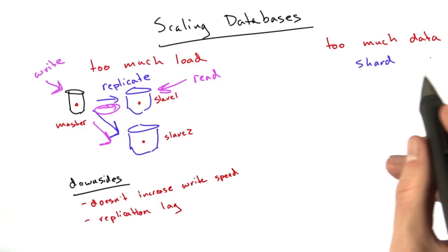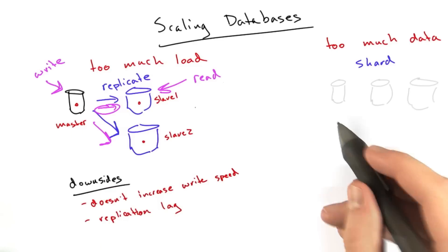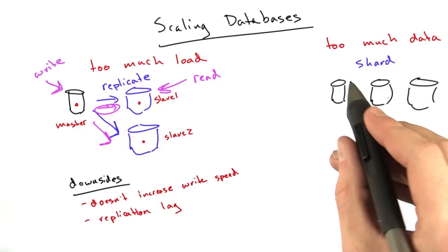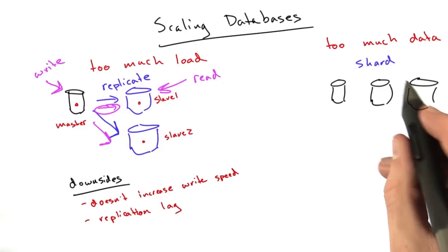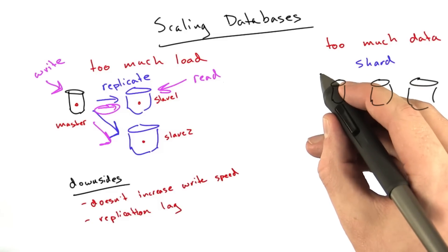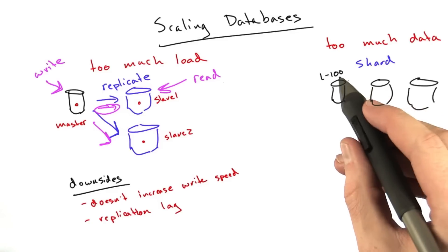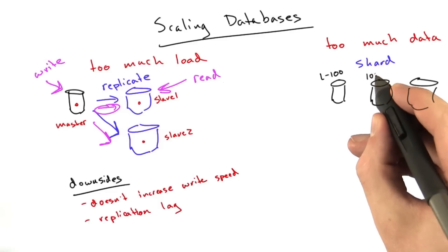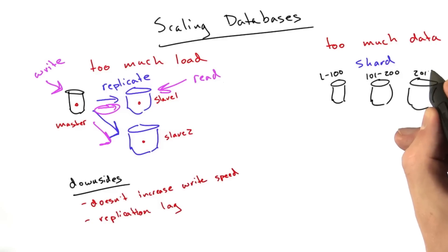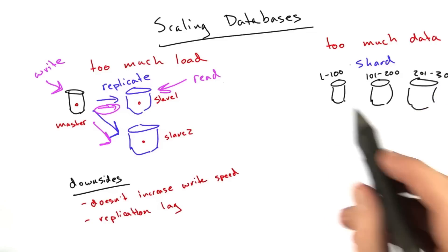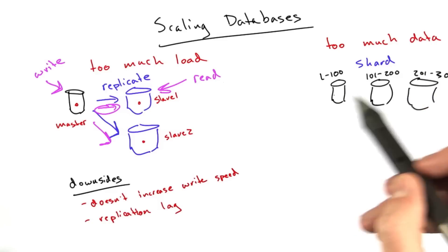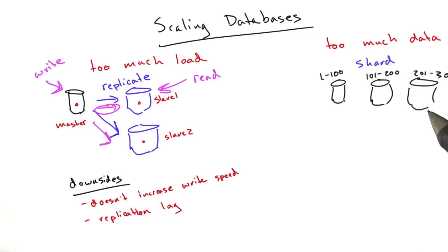Now, what happens if you have too much data for one machine? The replication handles the case where you have too much load. What if you just have too much data? Your master database can't even hold all of your data. It doesn't fit in memory or even in disk. One of the things you can do is you can shard the database.